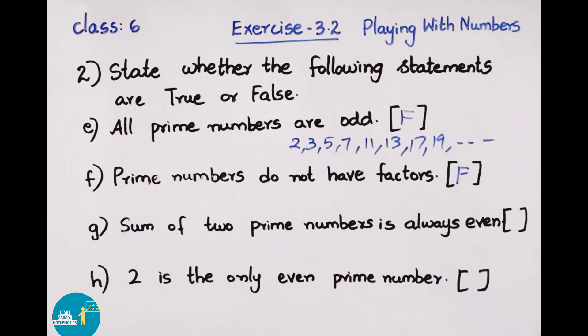Statement g: Sum of 2 prime numbers is always even. Two prime numbers: 2 plus 7. When we add 2 plus 7, we get 9, which is an odd number. The statement says it should be even, but we got odd, so the statement is false. Statement h: 2 is the only even prime number. When we look at the prime numbers list, 2 is the only even prime number. So the statement is true.